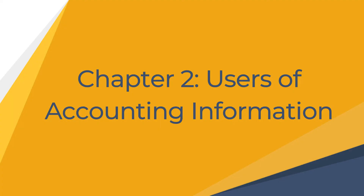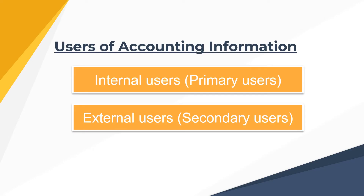Chapter 2: Users of Accounting Information. There are two broad categories of users of financial information: internal users, also called primary users, and external users, also called secondary users.